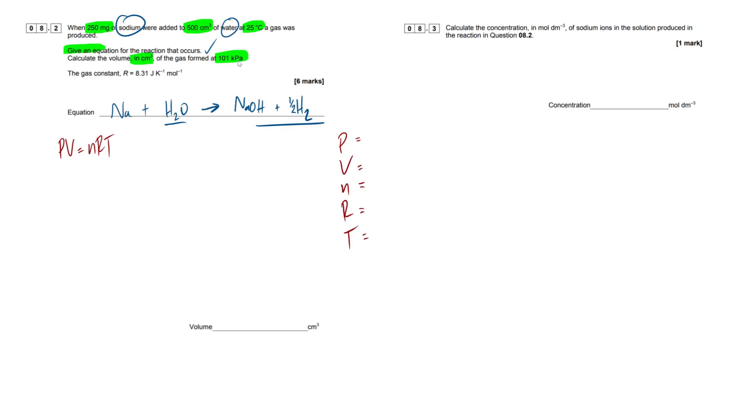So what do we have first, our pressure? So 101 kilopascals. Now, is kilopascals our standard unit? No, it's pascals. So it's going to be 101,000 pascals. Next up is volume. So that's what we want to know, we don't know what our volume is. Next up is our moles. Do we know what that is? No, but we can calculate it.